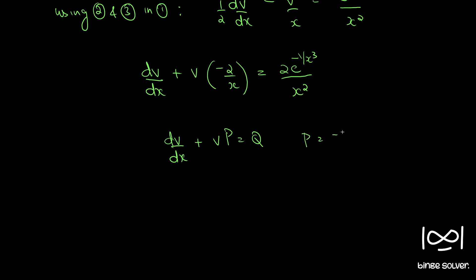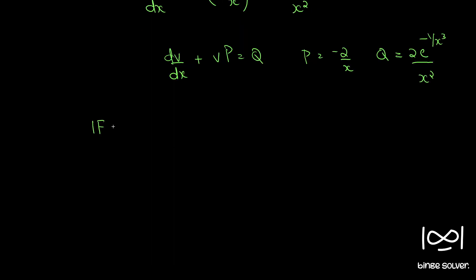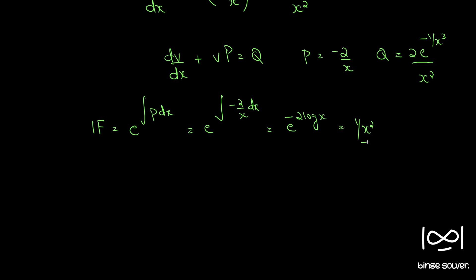Here P equals minus 2 by x, and Q equals 2 e raised to minus 1 by x cubed divided by x squared. The integrating factor for such a linear differential equation is e raised to the integral of P dx, which gives e raised to the integral of minus 2 by x dx, or e raised to minus 2 log x, giving us 1 by x squared as our integrating factor.